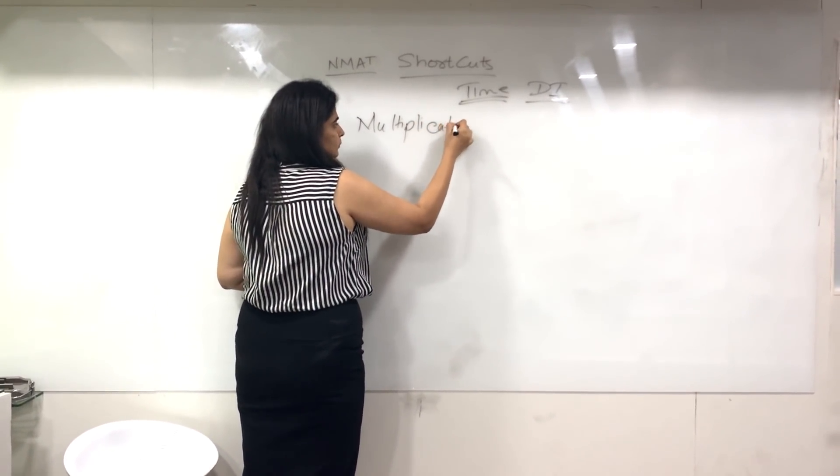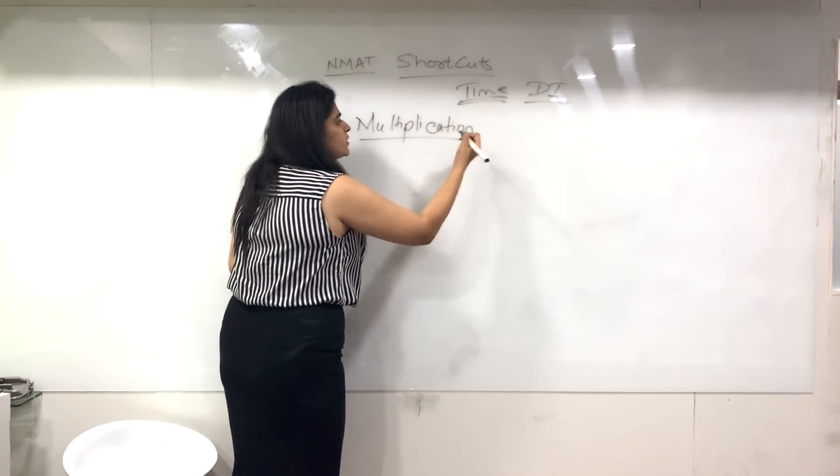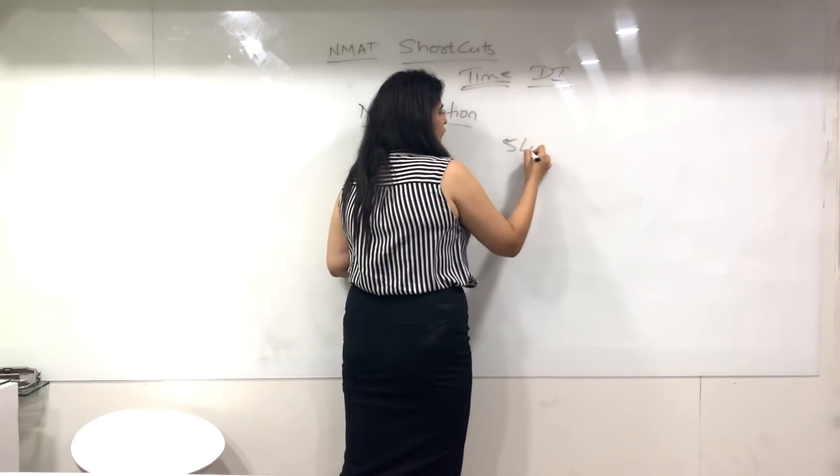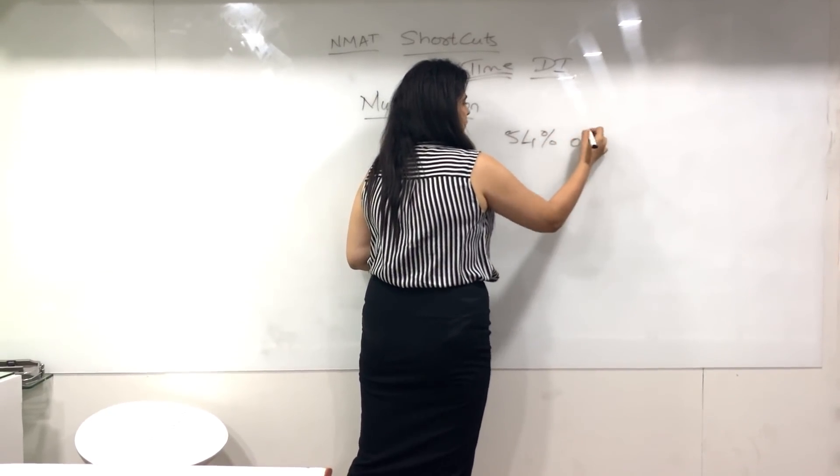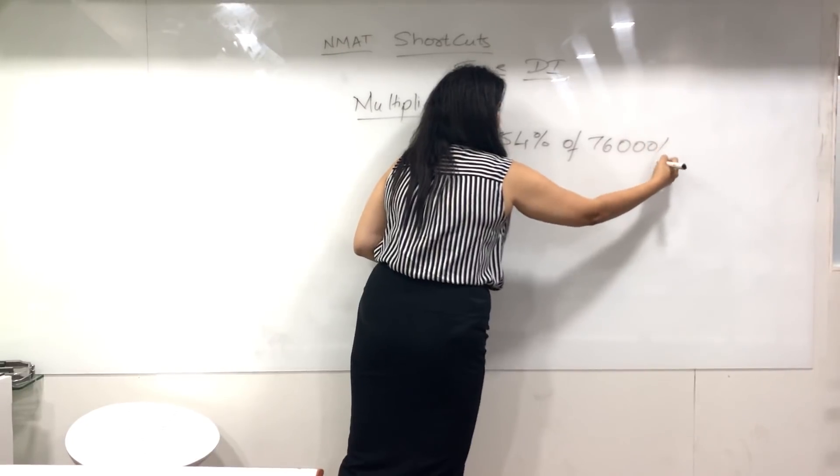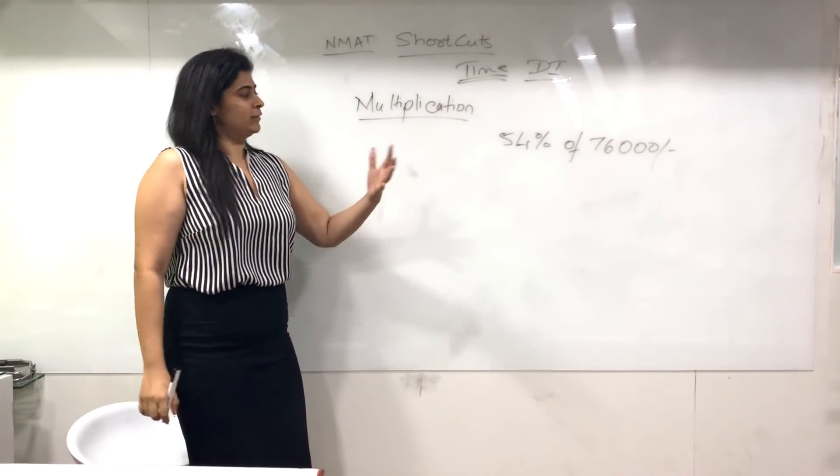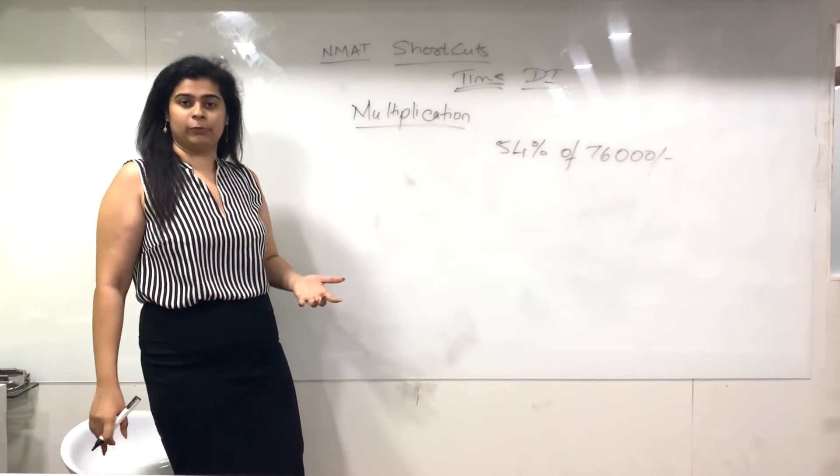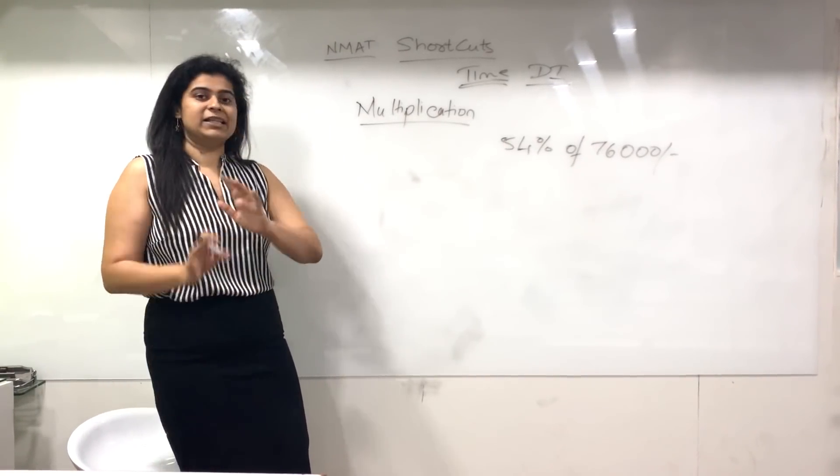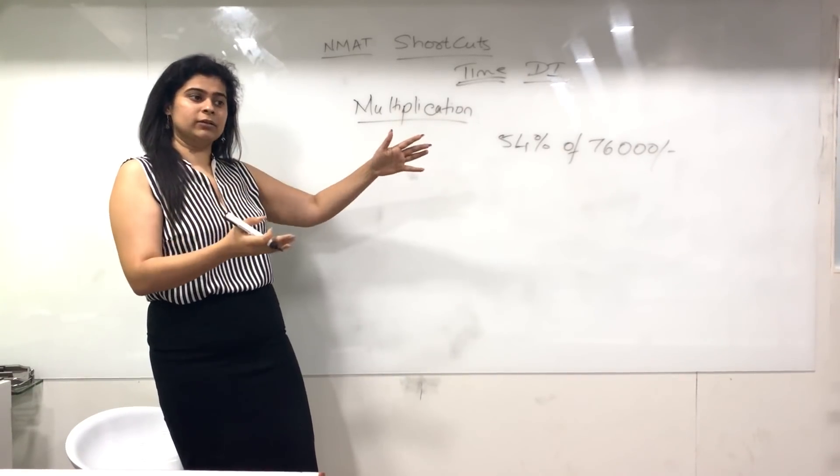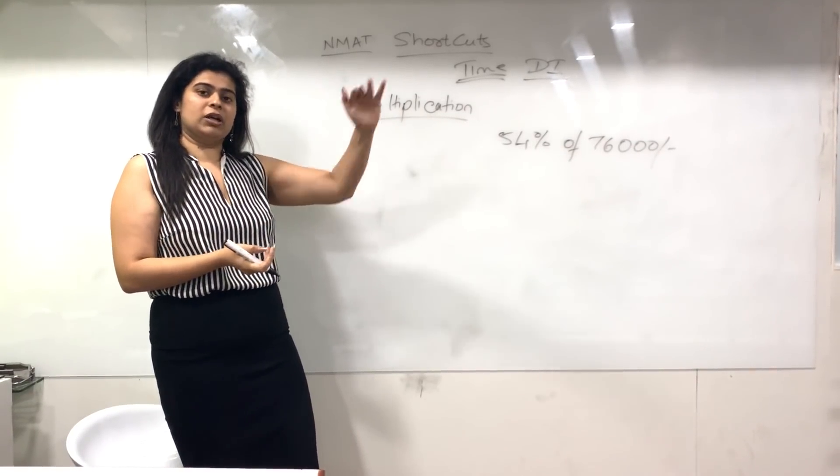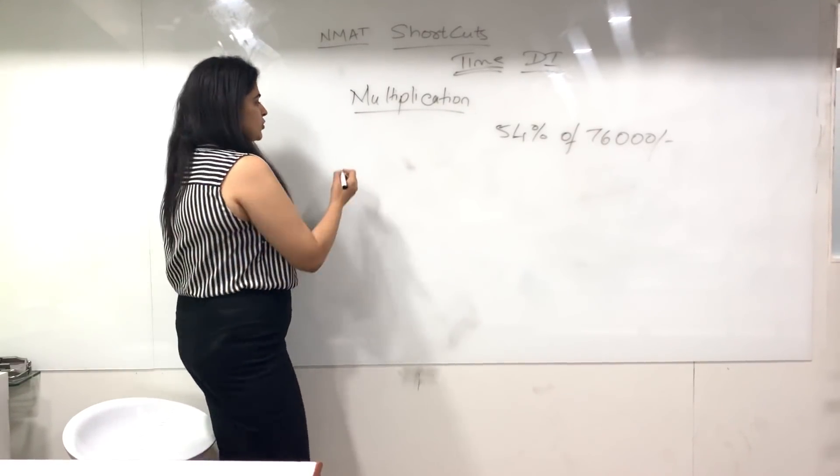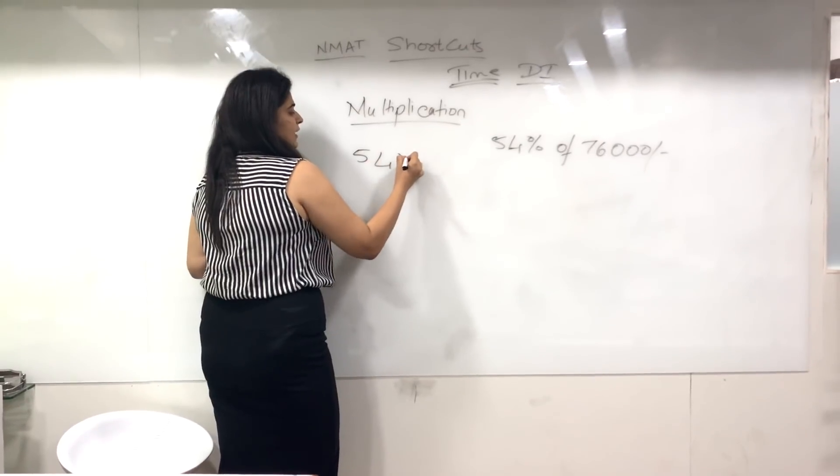Suppose you need to find 54% of profits which was 76,000. In this case, you don't need to do entire multiplications. You could approximate, but let's get the exact numbers because many times in NMAT your answer options are very close, so we can't do approximations. Let's learn the multiplication technique.